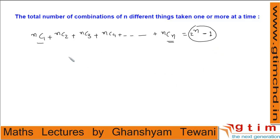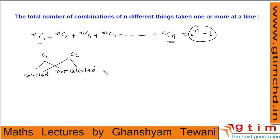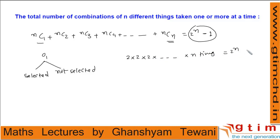Another way to see this: for each object, there are two options — either that object is selected or not selected. For object 2, there are also the same options. With n total objects, the total number of options are 2 × 2 × 2 ... n times, which equals 2 power n. But we must subtract the one possibility that no object is selected, since we need to select at least one object.